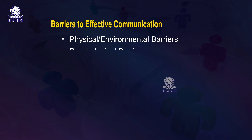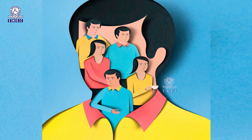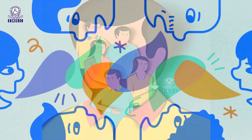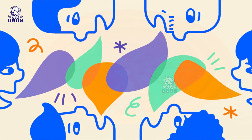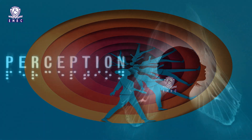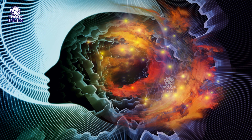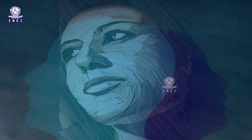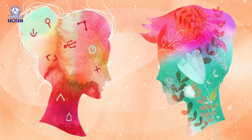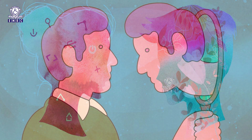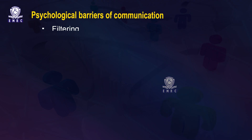The next category of barriers to communication is psychological barriers. Psychological barriers deal with the psychological processes of humans involved in communication. Broadly speaking, this phenomenon is related to thinking, memory, perception, mental set, attitude, expectations, and the personality of senders and receivers involved in the process of communication. Some of the psychological barriers are as follows.